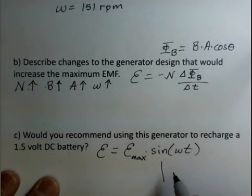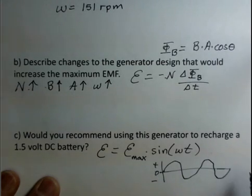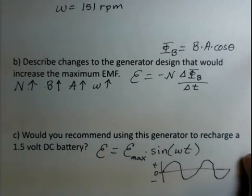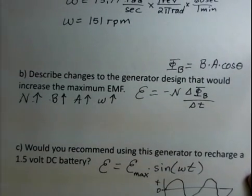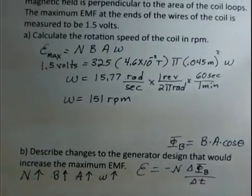The EMF, in terms of making a graph here, plus and minus EMF changes as the angle, omega t, as an angle changes. So not a good choice for DC current. They have to do it a different way. And there are other ways. People, of course, have figured that out.